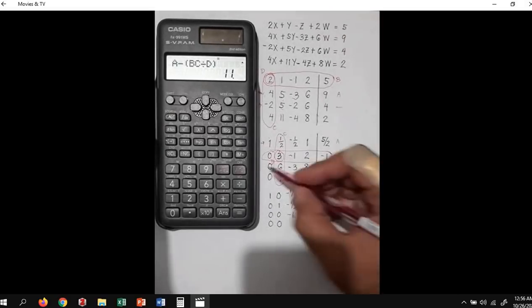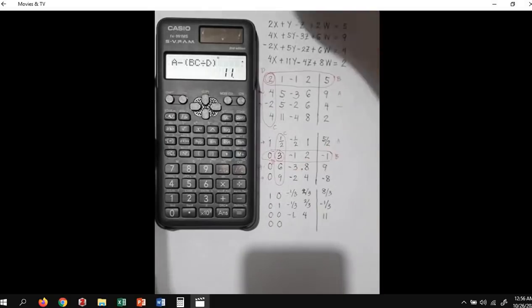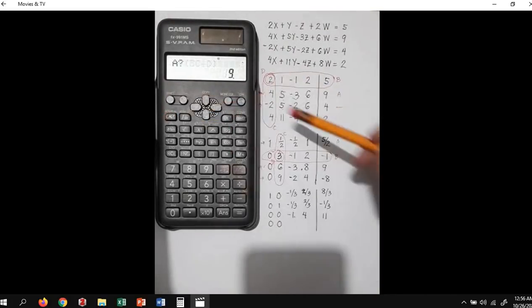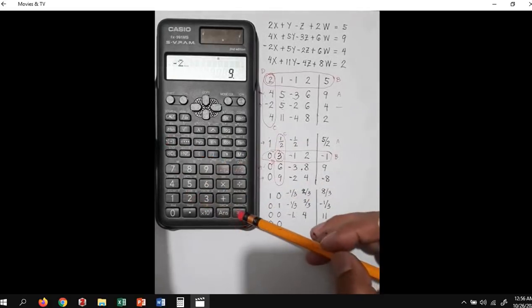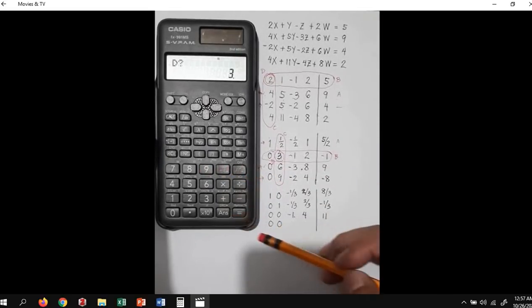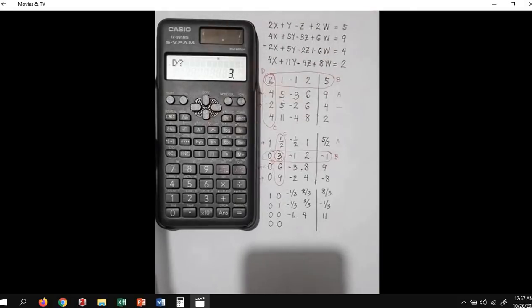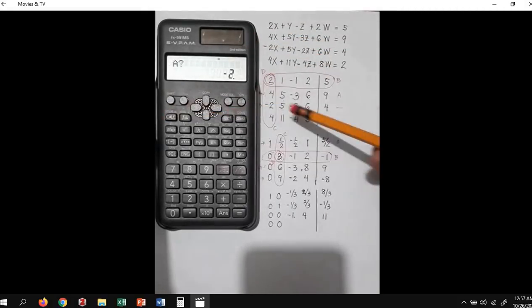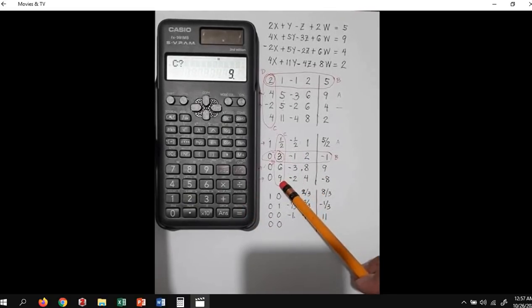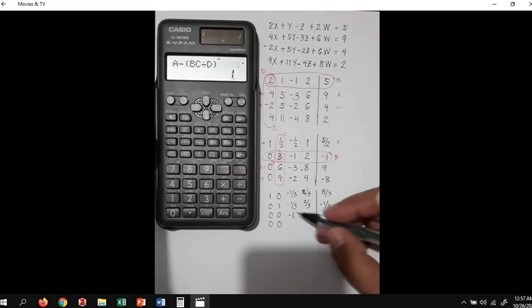Next, for the last row: press the calc function again. A is negative 2, B is negative 1, C is 9, D is 3. We review, pressing calc again: A is negative 2, B is negative 1, C is 9, D is 3. The value is 1.